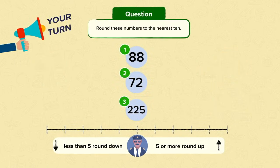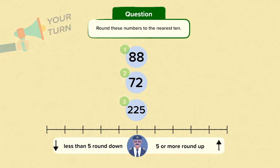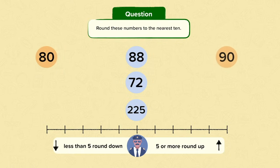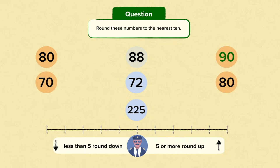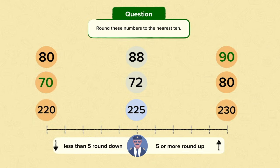Your turn now. Can you round these numbers to the nearest ten? Remember the rounding rules while you're doing it. Pause the video and have a go. Well done if you knew that 88 was between 80 and 90. Because the ones digit is more than five, you round up to 90. 72 is between 70 and 80. The ones digit is two, which is less than five, so you round down to 70. 225 is between 220 and 230. Because the ones digit is five, you round up to 230.